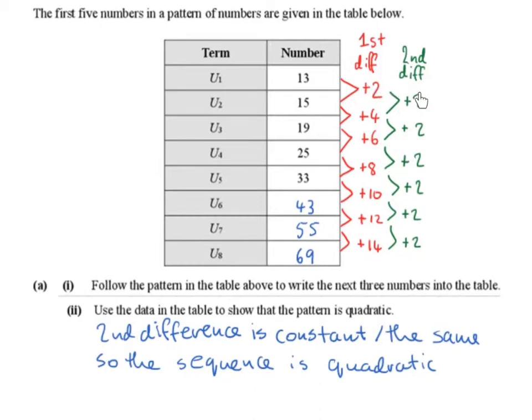Now looking at the differences between those first differences: from 2 to 4 is a difference of 2, from 4 to 6 is a difference of 2, from 6 to 8 is a difference of 2, and from 8 to 10 is a difference of 2.